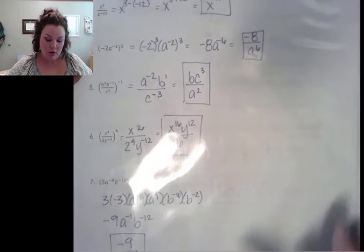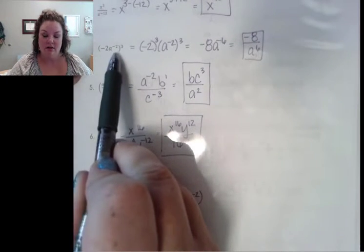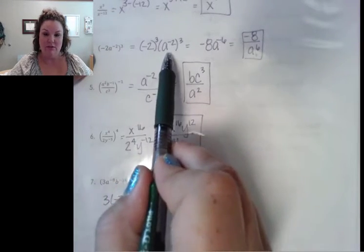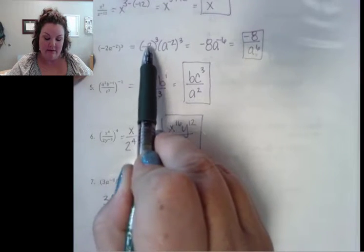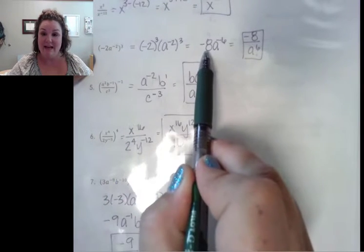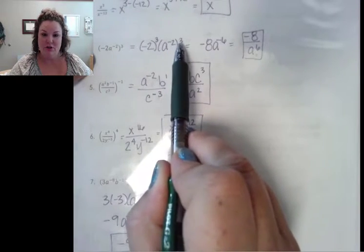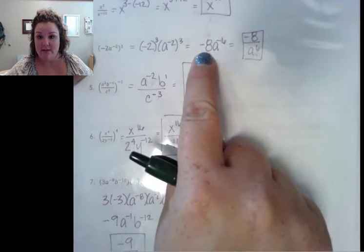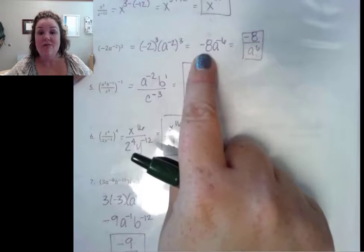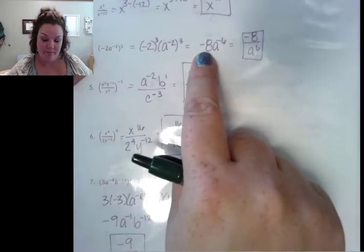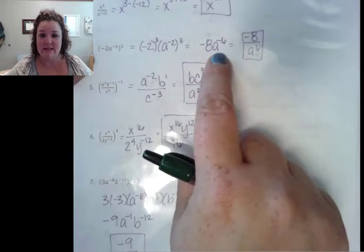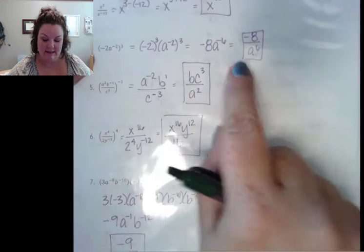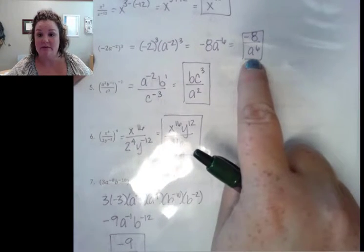For number 4, we are cubing everything in here. We have a negative 2 that needs to be cubed and an a to the negative 2 that needs to be cubed. Negative 2 cubed gives me negative 8. a to the negative 2 cubed gives me a to the negative 6. Notice 8 does not have a negative exponent, so we don't have to worry about moving that — negative numbers are okay, negative exponents we have to move. So only the a to the negative 6th goes down to the denominator to make it a positive 6.